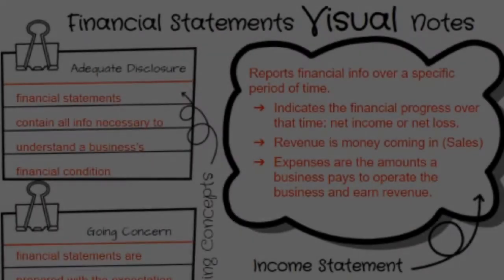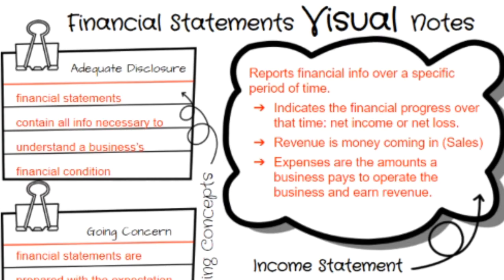The income statement reports financial information over a specific period of time and indicates the financial progress over that time, meaning either net income or net loss — did the business make or lose money? Revenue is money coming in; our revenue account has been sales in our example. Expenses are the amounts a business pays to operate and earn revenue, such as advertising, utilities, and rent.